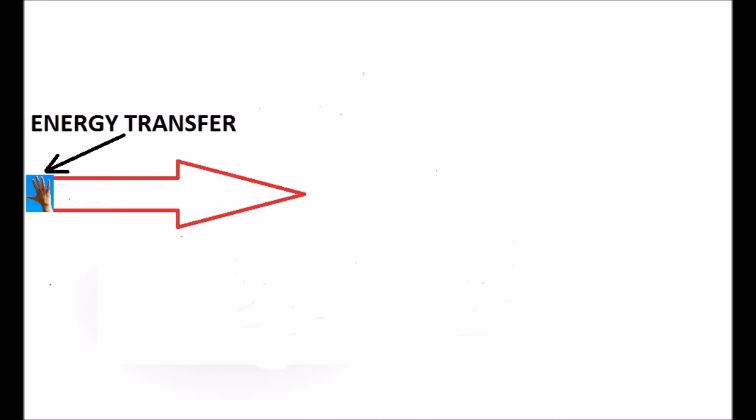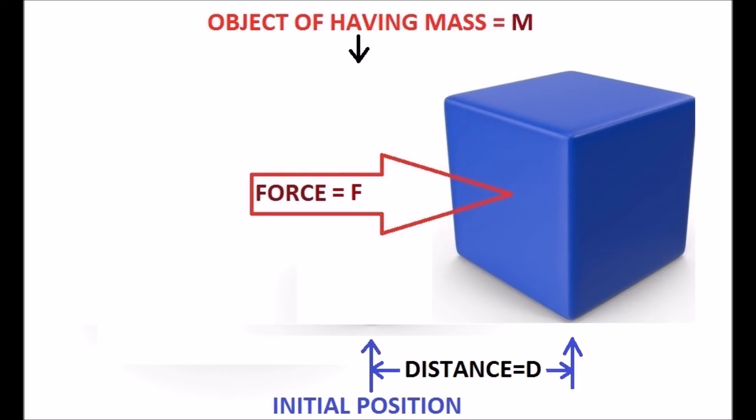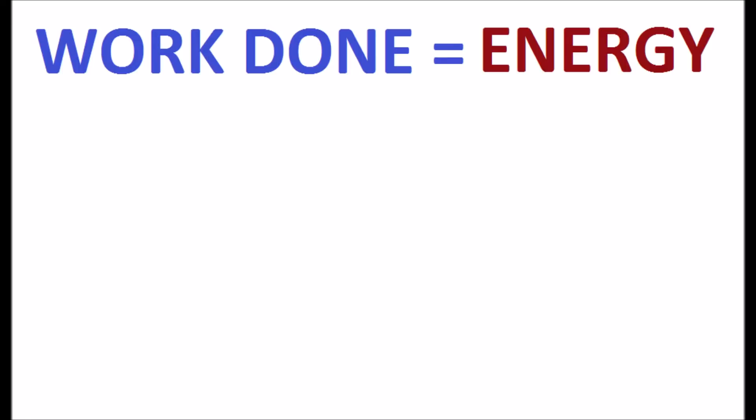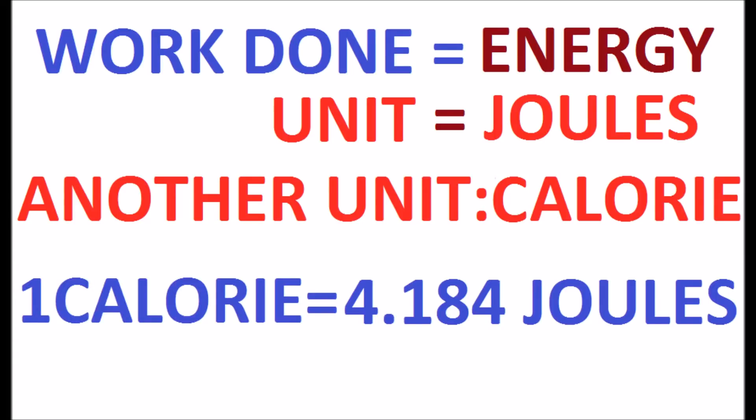Energy transfer causes production of force acting on a mass to move. Hence, work done and energy have the same unit: joules. Another unit for energy is the calorie. One calorie equals 4.184 joules.